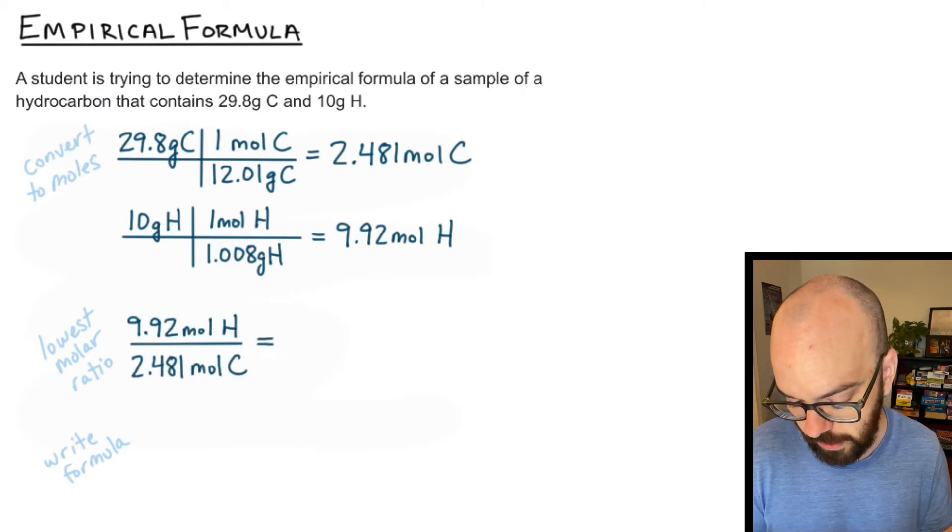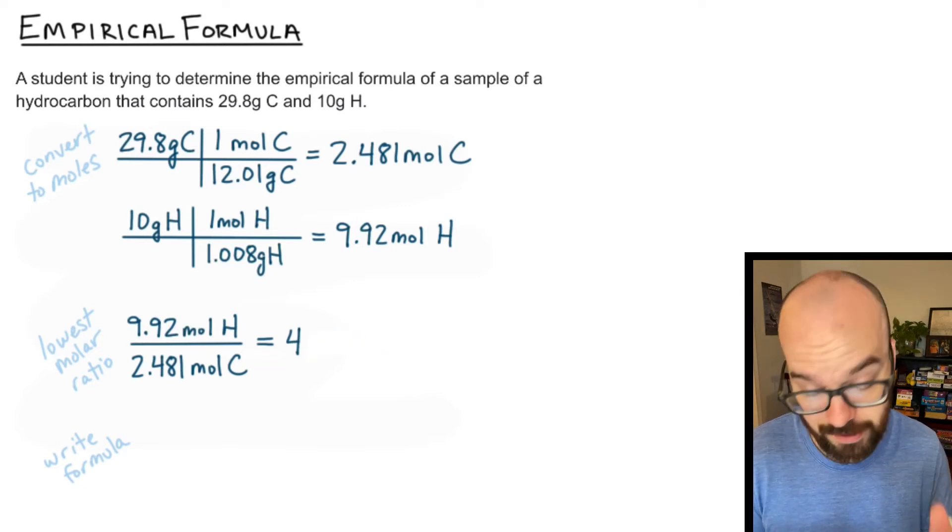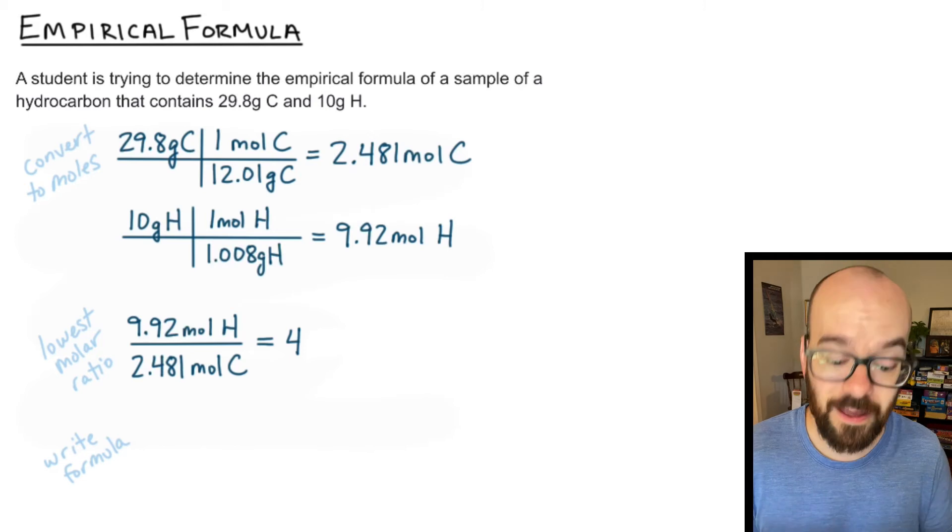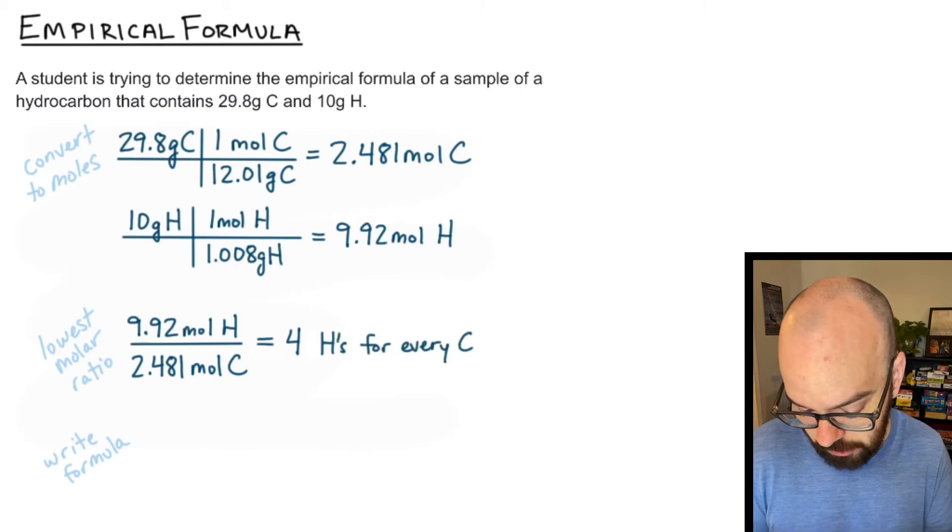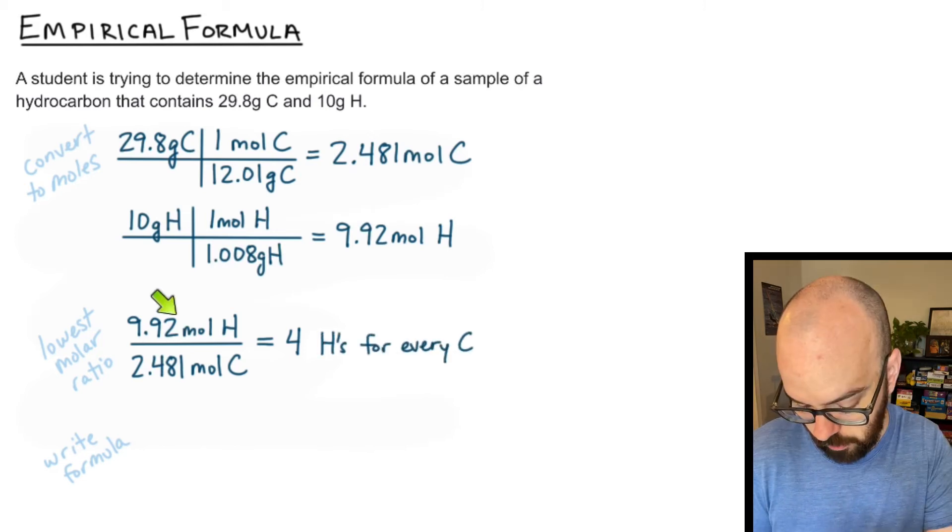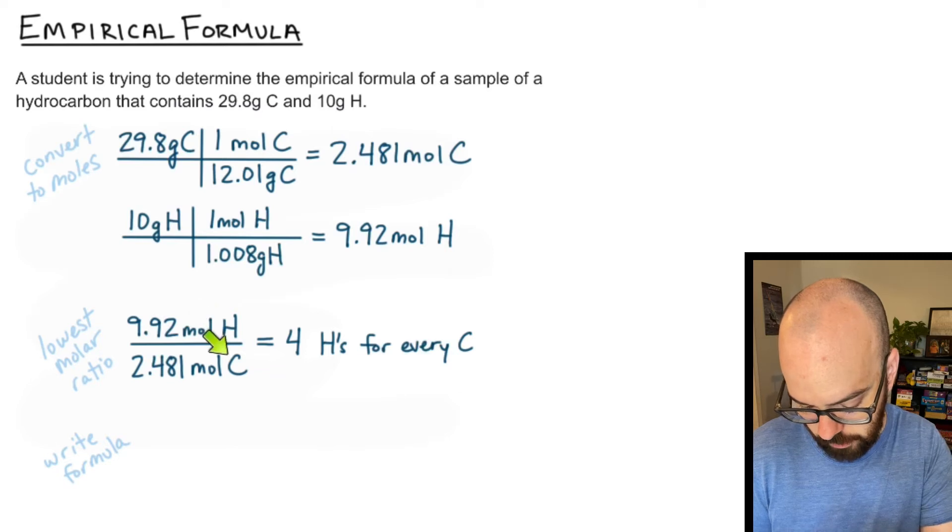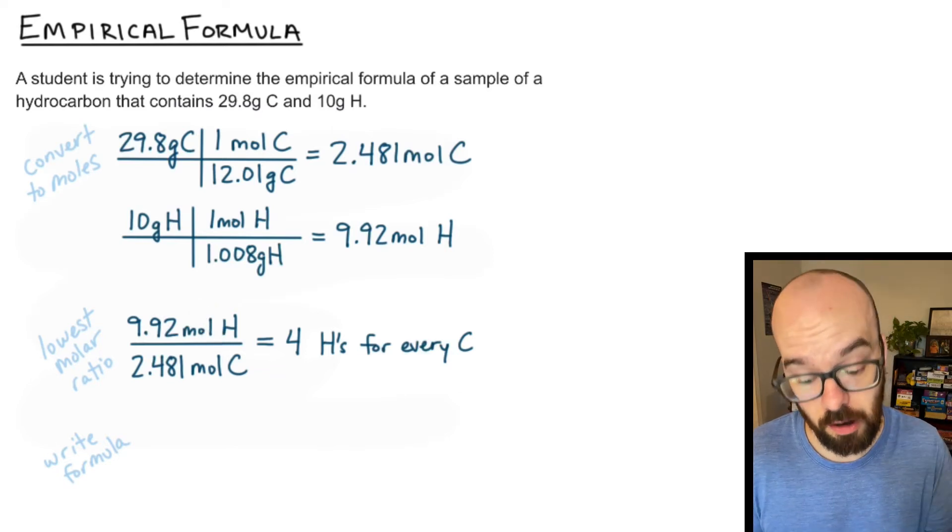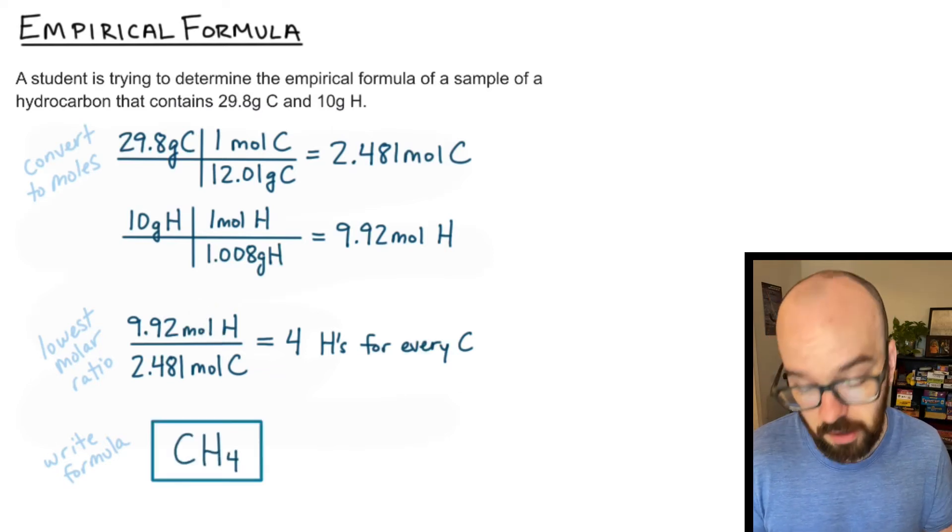So 9.92 divided by 2.481 and I get 4.0002 or basically I get four and what that means is that I have four hydrogens for every carbon. Four hydrogens for every one carbon. So I have one carbon and four hydrogens.